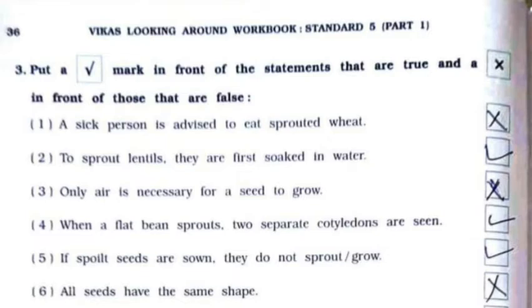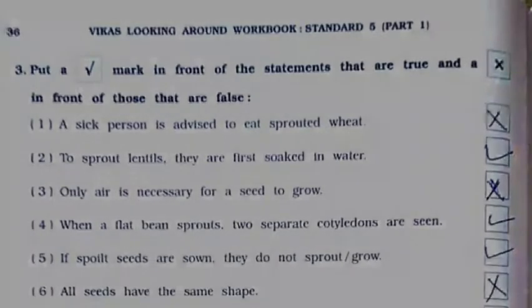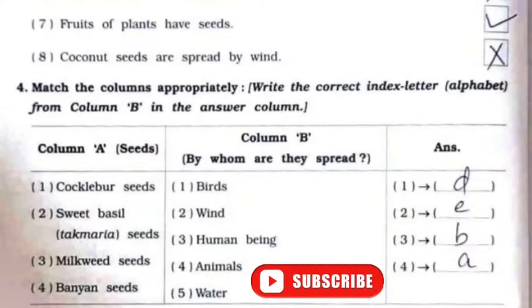Fourth: when a flat bean sprouts, two separate cotyledons are seen — it is true. Fifth: if spoiled seeds are sown they do not sprout or grow — it is true. Sixth: all seeds have the same shape — it is false. Seventh: fruits of plants have seeds — it is true.